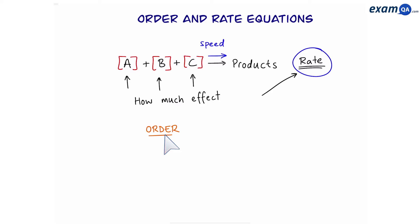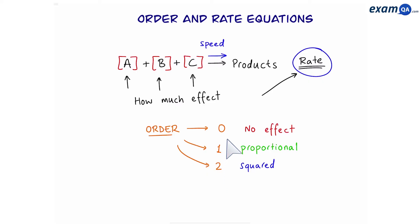The order can be in three categories: zero, first, or second. A reactant that has zero order means that changing its concentration will have no effect on the speed of the reaction. First order means that the rate will be proportional to the change of concentration. And in second order, the rate will be the change of concentration squared. Don't worry if this is confusing, because we're about to do an example right now.